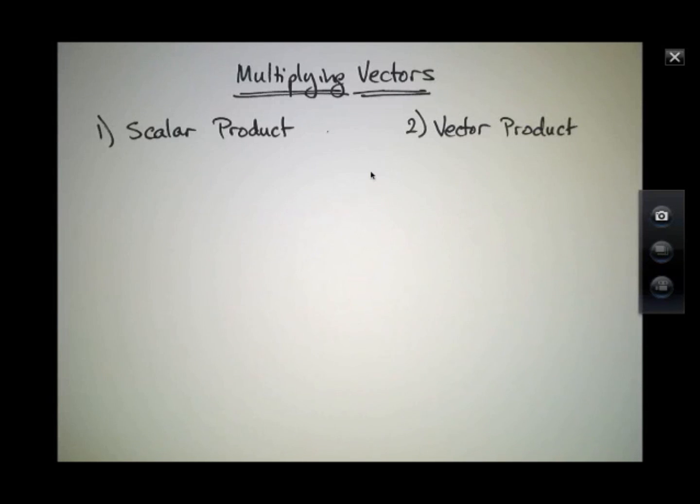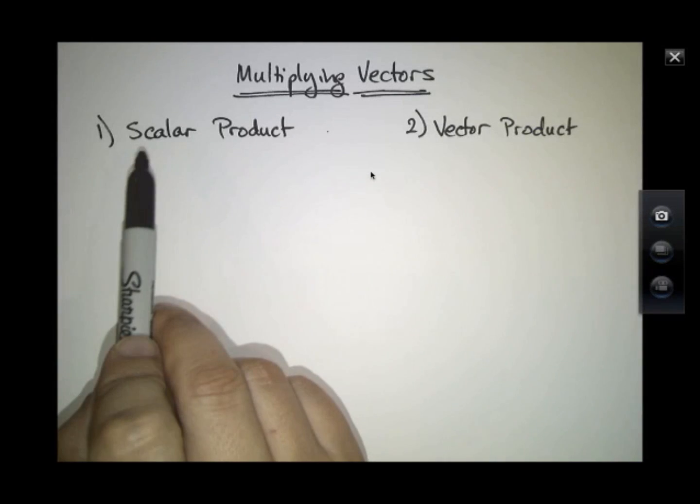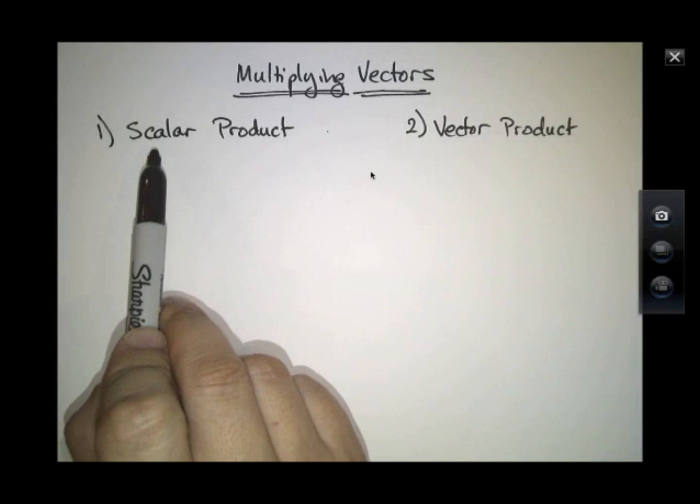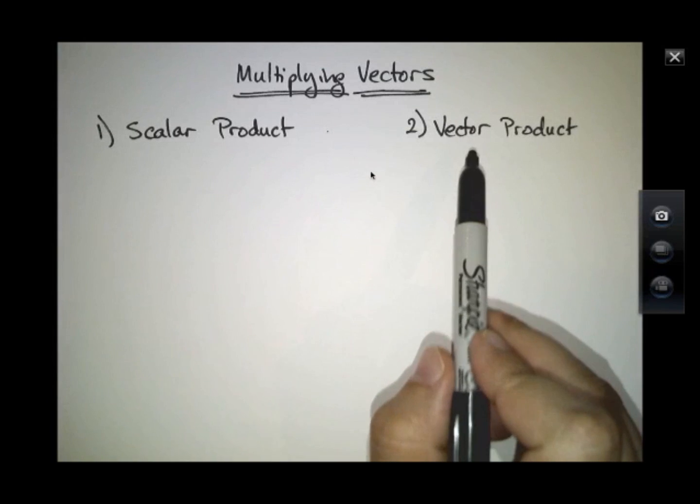Actually, both forms of multiplication of vectors, and there are two forms, deal in various ways with assessing the relative direction of two vectors. So the two kinds of multiplication go by the name of the scalar product or the vector product.